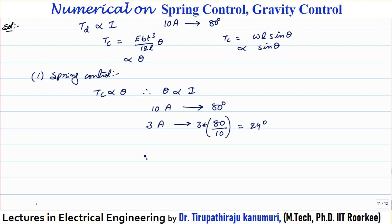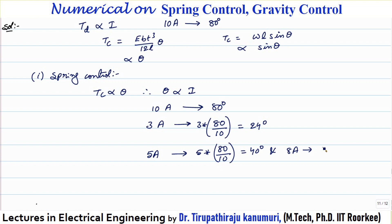Similarly, for 5 amperes, the deflection is 5 multiplied by 80 divided by 10, which equals 40 degrees. And for 8 amperes, it is 8 multiplied by 80 divided by 10, which equals 64 degrees. So we have the three answers for spring control.